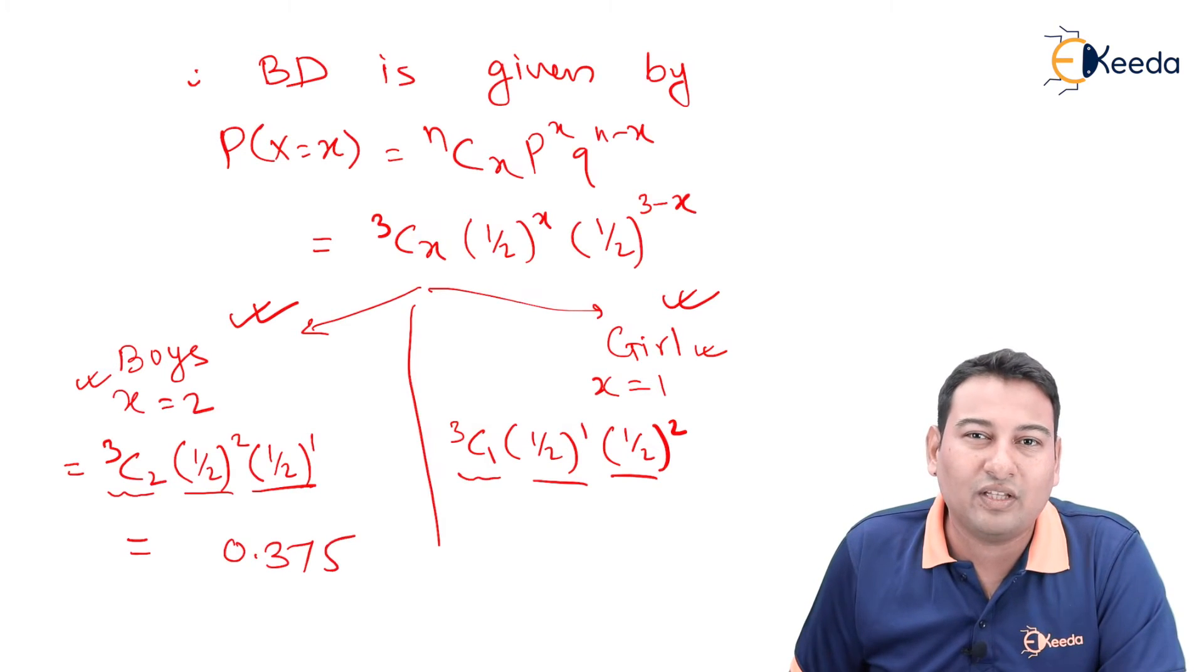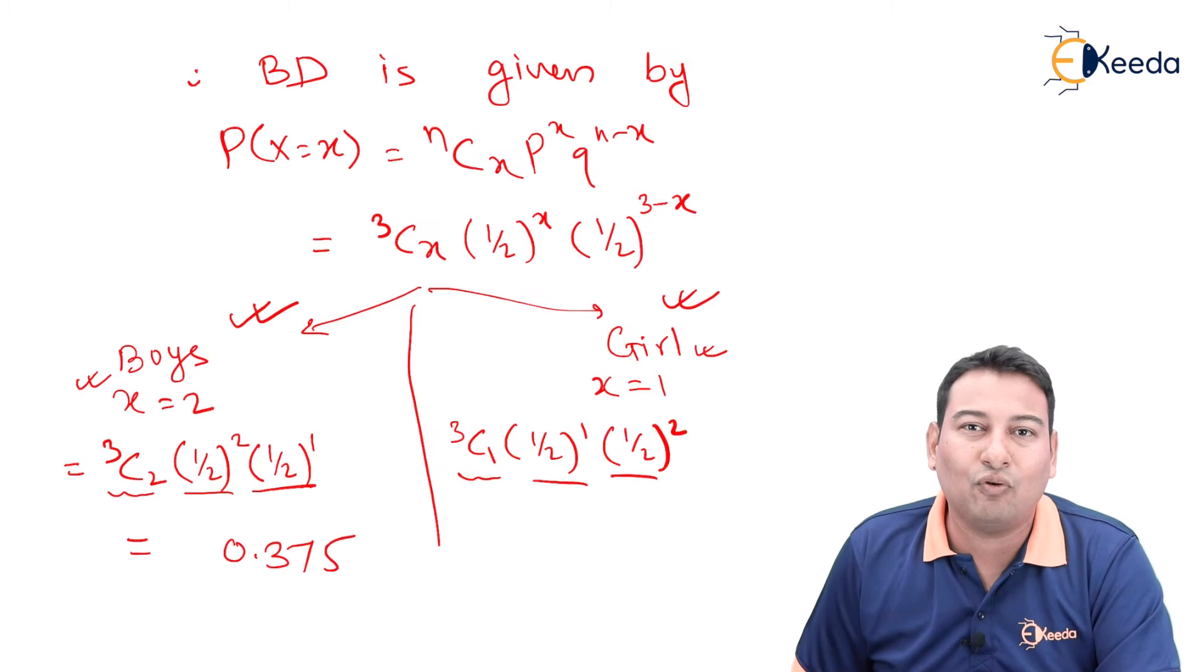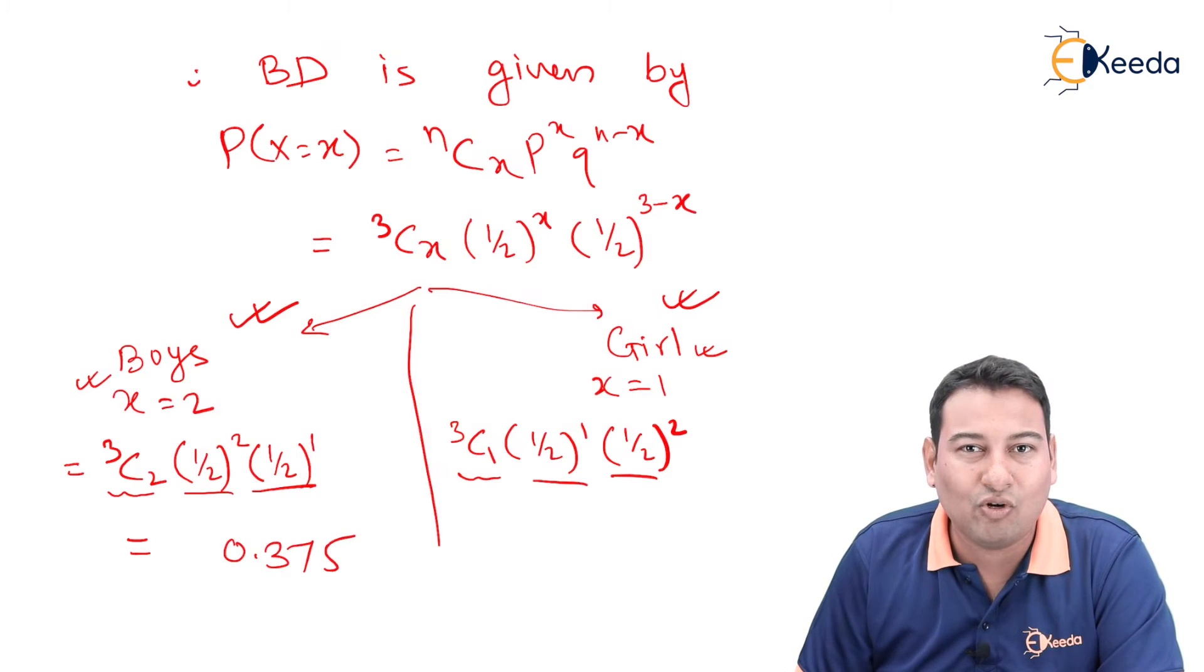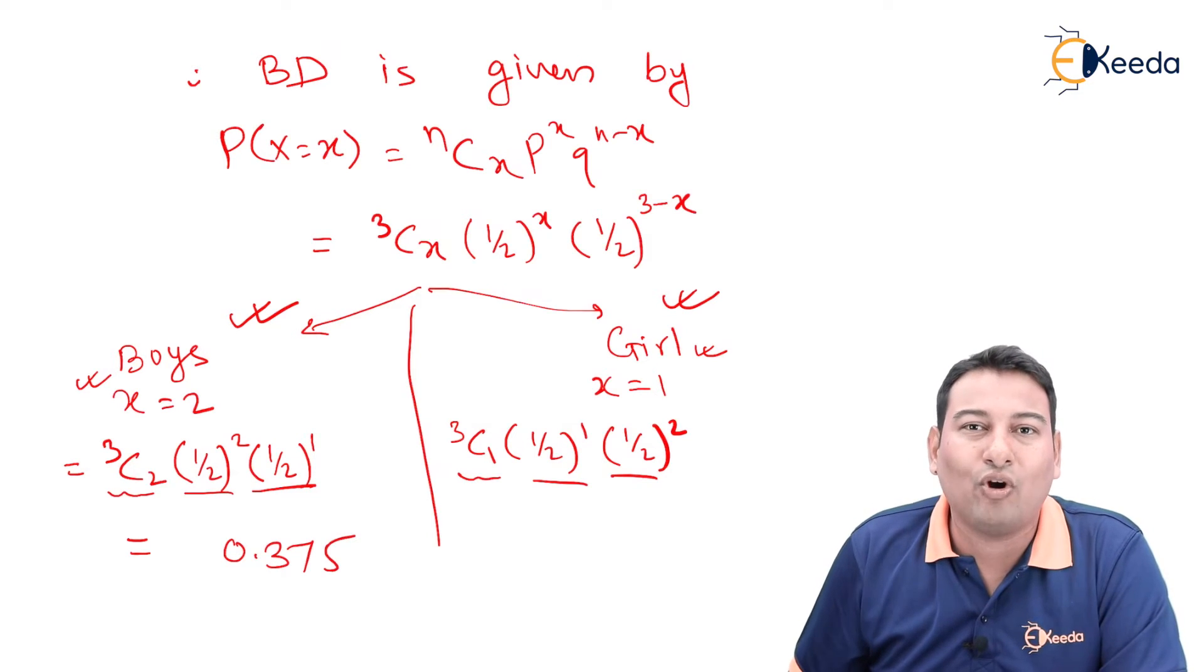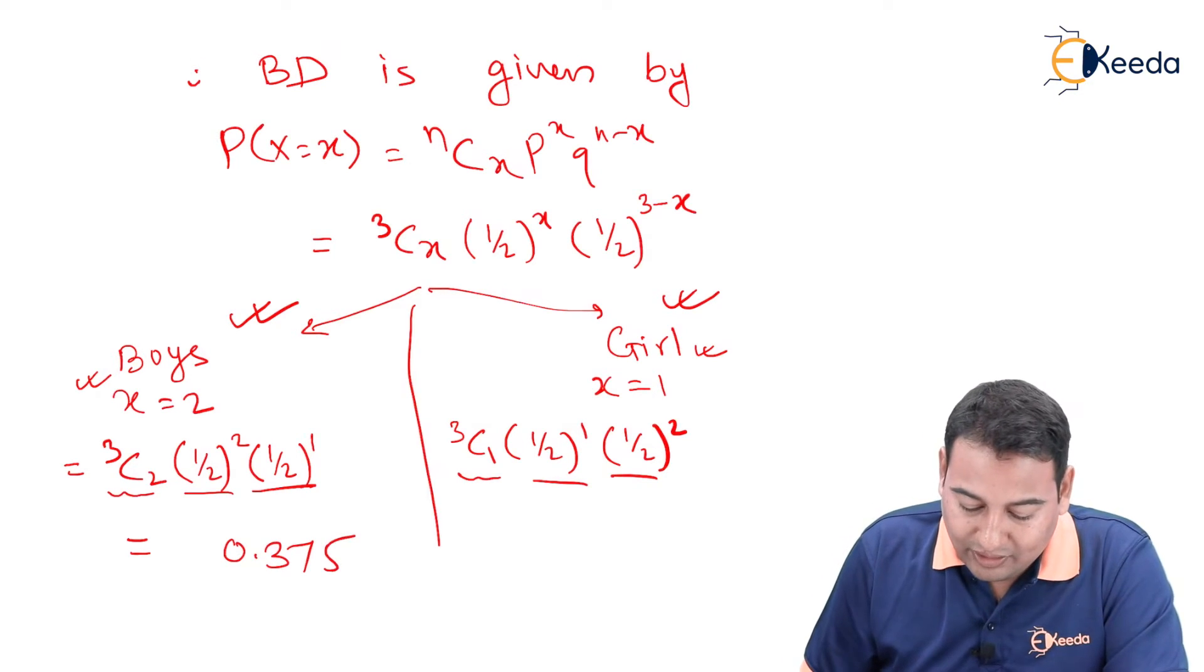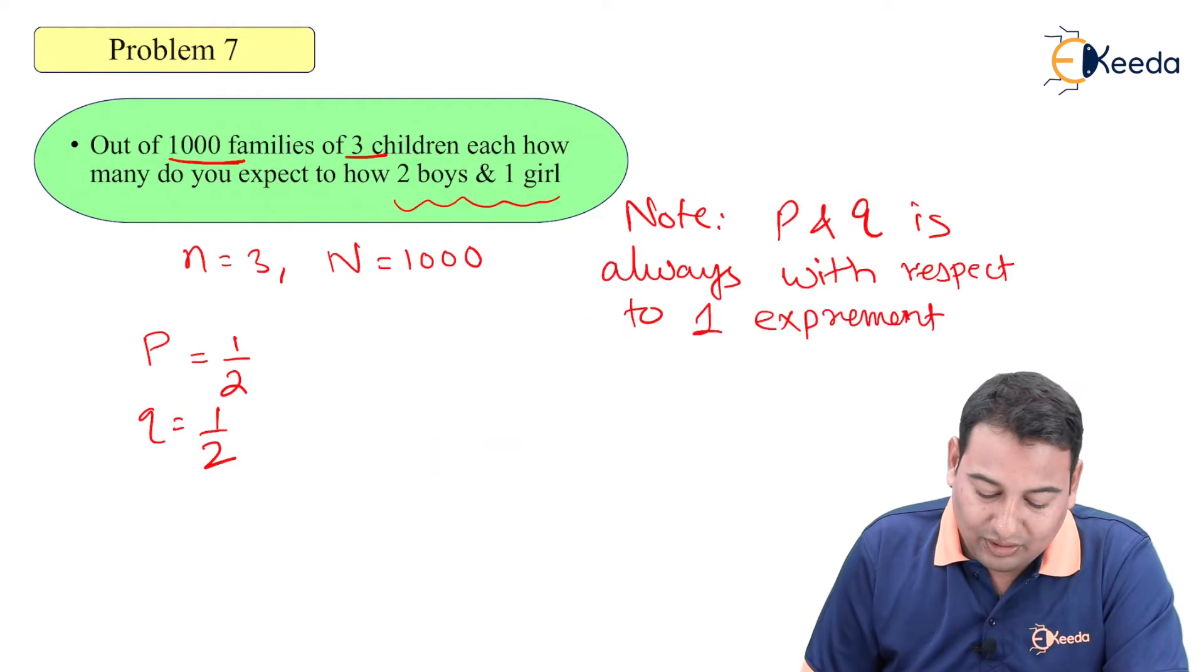So P, Q, half with respect to boy and girl both. Therefore, you can either go with the boy, that is x equal to 2 or with girl, x equal to 1. Any one you can do it in the exam, you will get the answer as 0.375. Let us check what is asked in the problem.